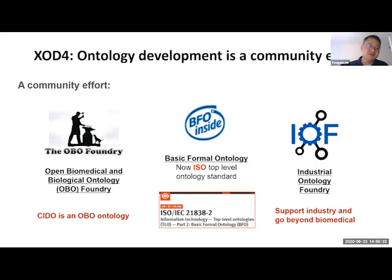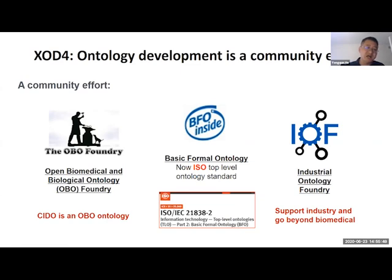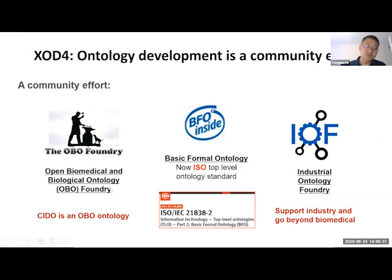That was just a flavor of how the tools can be useful. Community effort is important because previously hundreds of ontologies were developed without coordination, leading to many conflicts and interoperability issues. Then organizations emerged—I am part of one called OBO Foundry, the Open Biomedical and Biological Ontology Foundry. We applied for CIDO, the coronavirus infectious disease ontology, and luckily they approved our application. CIDO is now an OBO ontology. BFO, the Basic Formal Ontology, was just last month approved as an ISO top-level ontology standard, and most OBO ontologies are aligned with it.